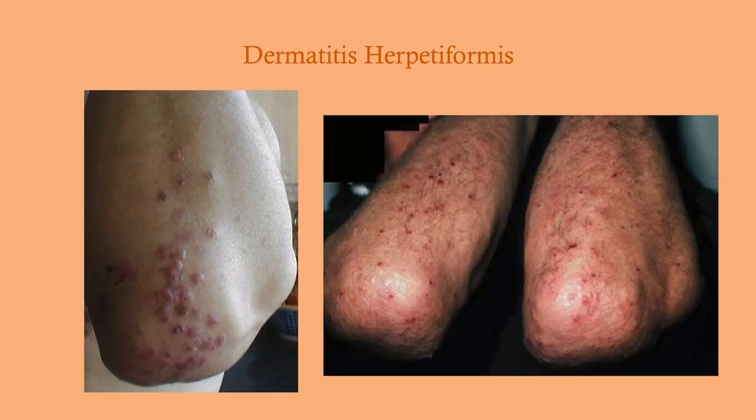This is dermatitis herpetiformis — you can see it does have a herpes-like appearance, very pustular and papular. It tends to be on the extensor surfaces.